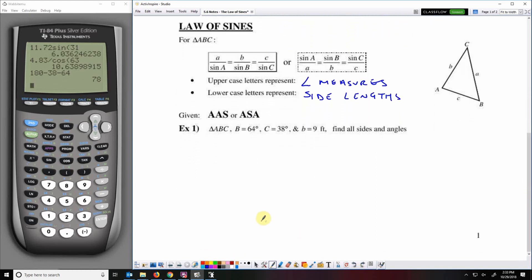So for triangle ABC we're going to draw that. Angle B is 64 degrees, angle C is 38 degrees, and side B is 9 feet. We want to find the measures of all the sides and angles. So we've got angle A over here which means across from that is going to be side A. Angle C across from that is side C. I need to find those two side lengths and that angle measure.